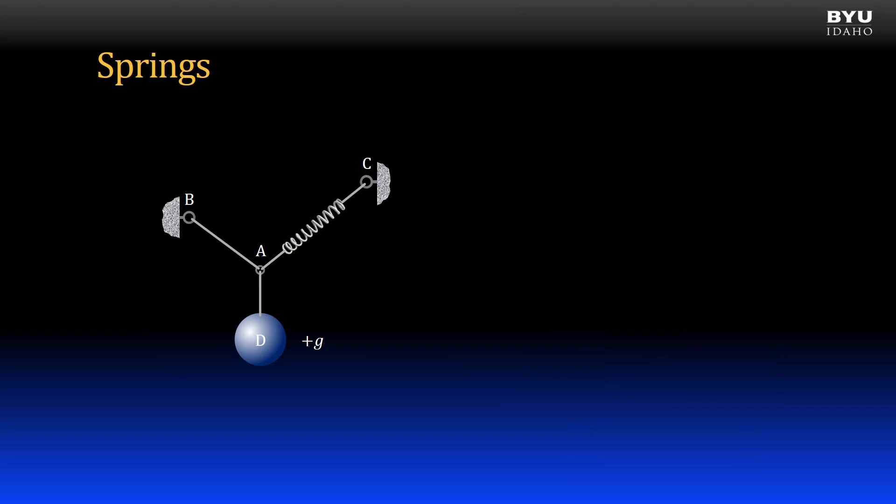Here is a static system consisting of a mass D supported by cables and a spring and their connecting supports. If we consider gravity pulling down on mass D, the spring is subjected to a tension force. Our free body diagram will look like this. The spring is replaced with a tension force pulling on particle A.